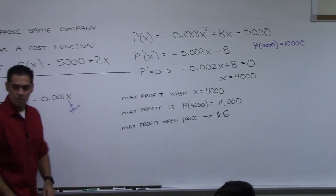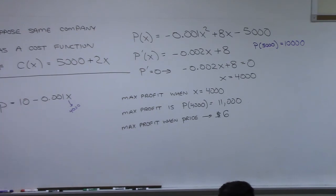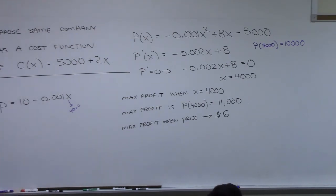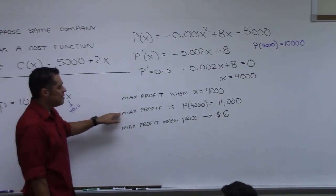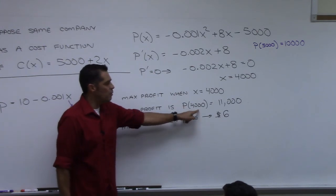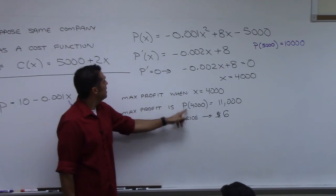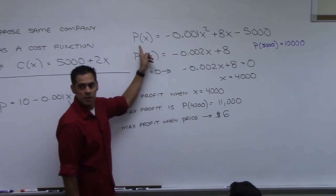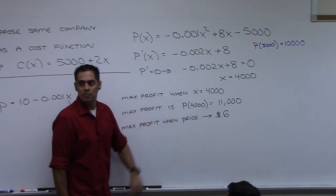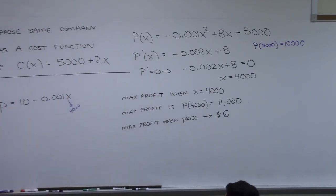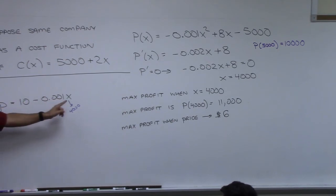Student question: to get the $11,000, you plug 4,000 into P — the profit function — not P prime. P(4,000) goes into the original profit function. If it had been P prime, you'd use the derivative. We plugged 4,000 into the price-demand equation to get $6, and into the profit function to get $11,000.